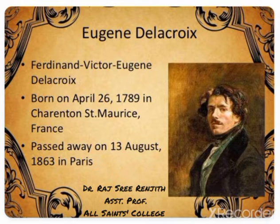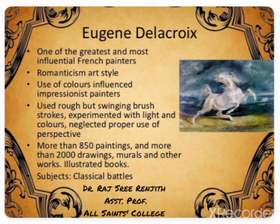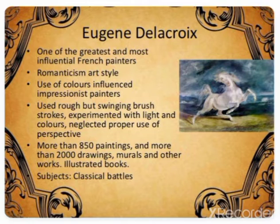Ferdinand Victor Eugène Delacroix is a French Romantic painter born on April 26, 1789 in France. He is one of the greatest and most influential French painters. His style was romantic.